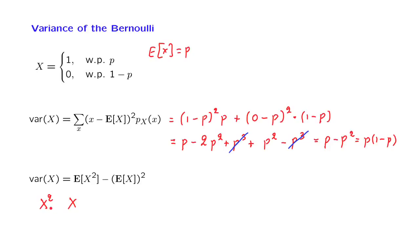When X is 0, X squared is also 0. When X is 1, X squared is also 1. So as random variables, these two random variables are equal in the case where X is a Bernoulli.